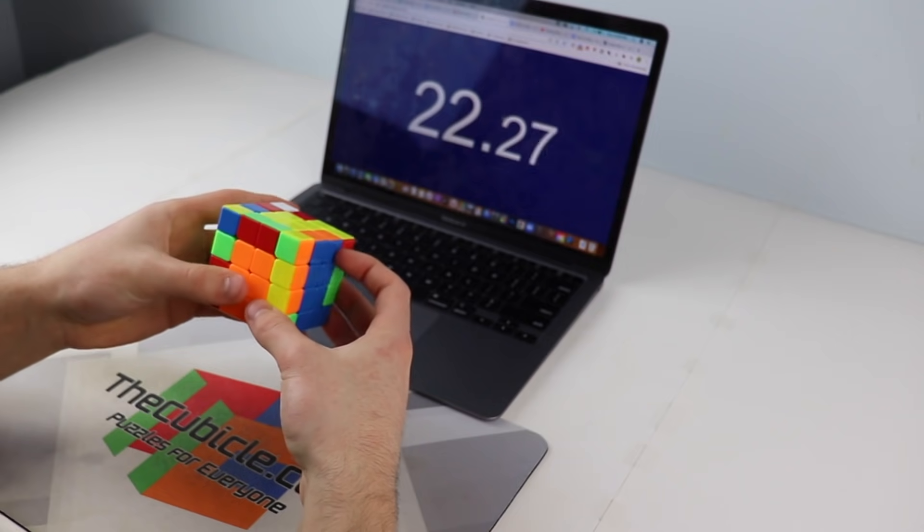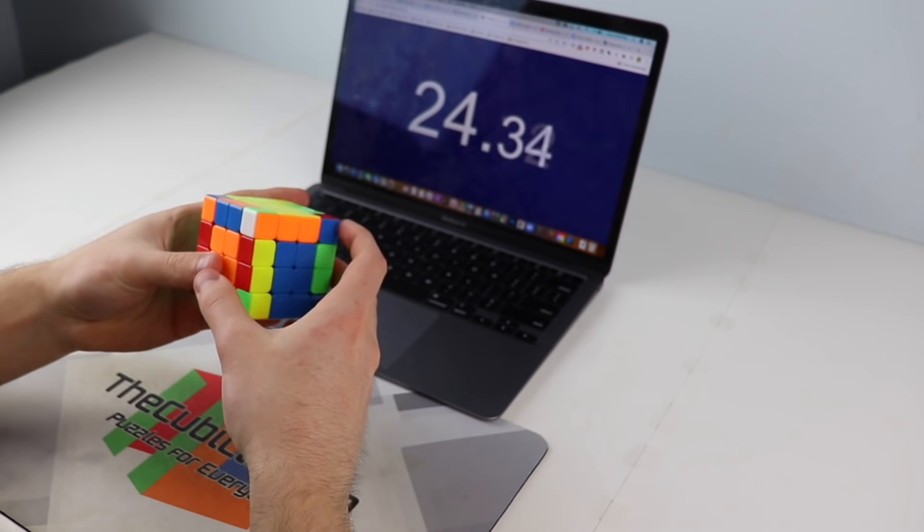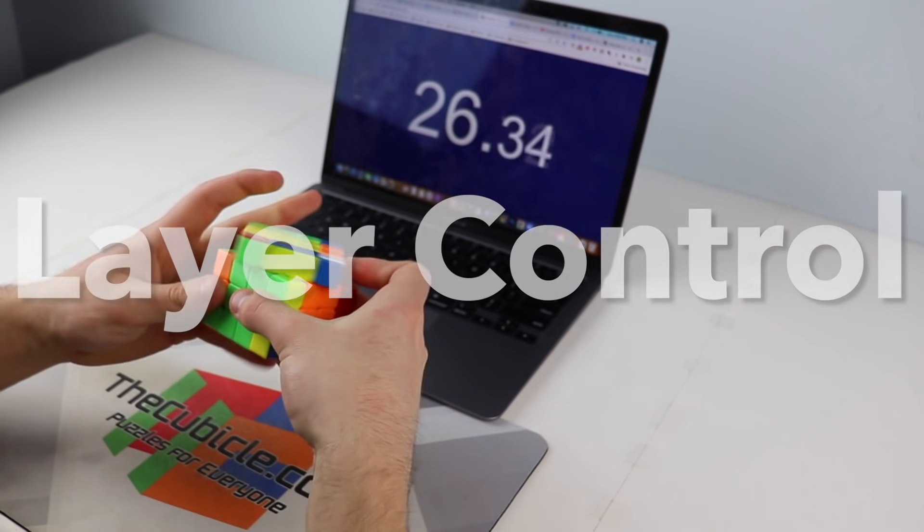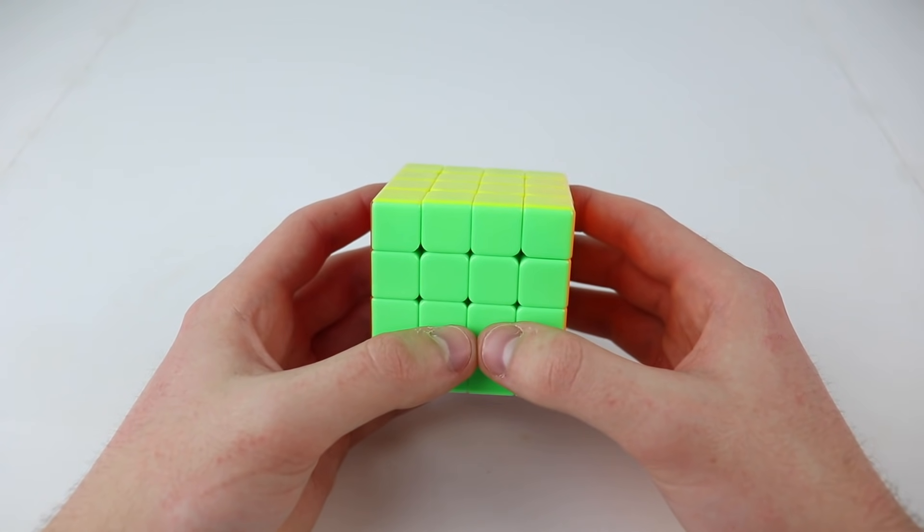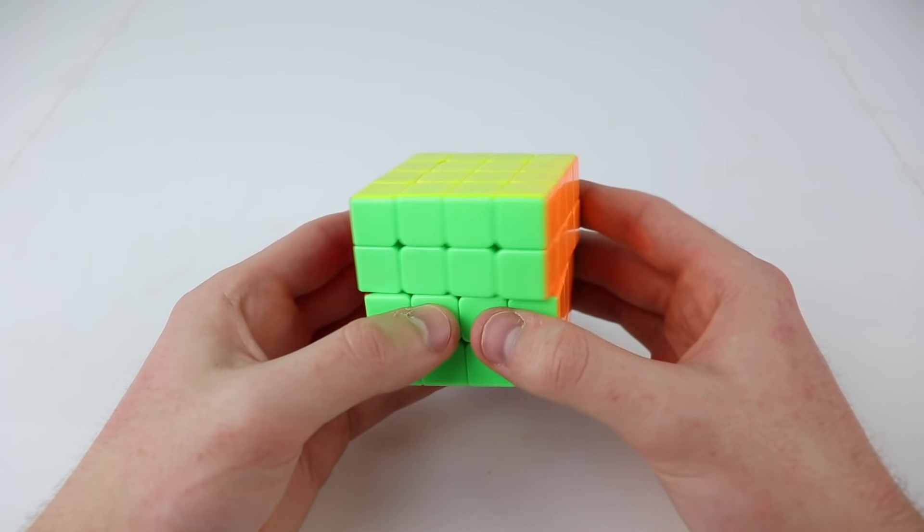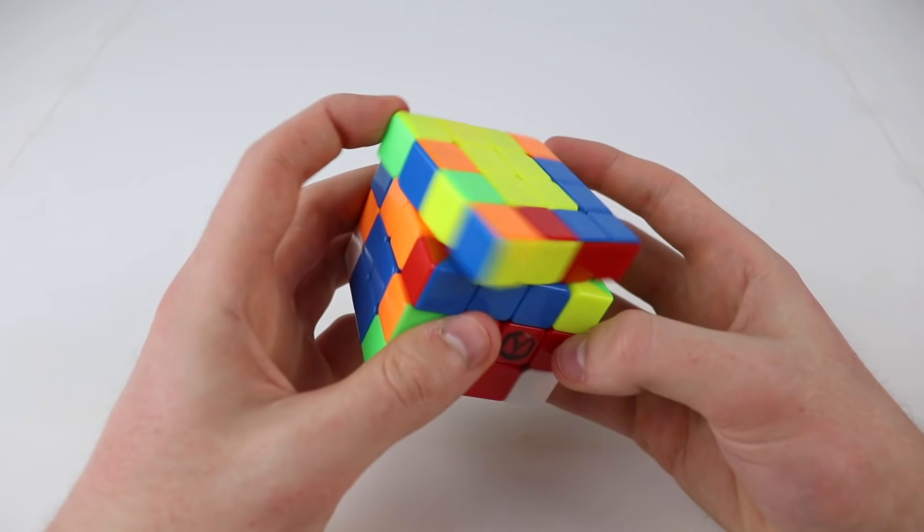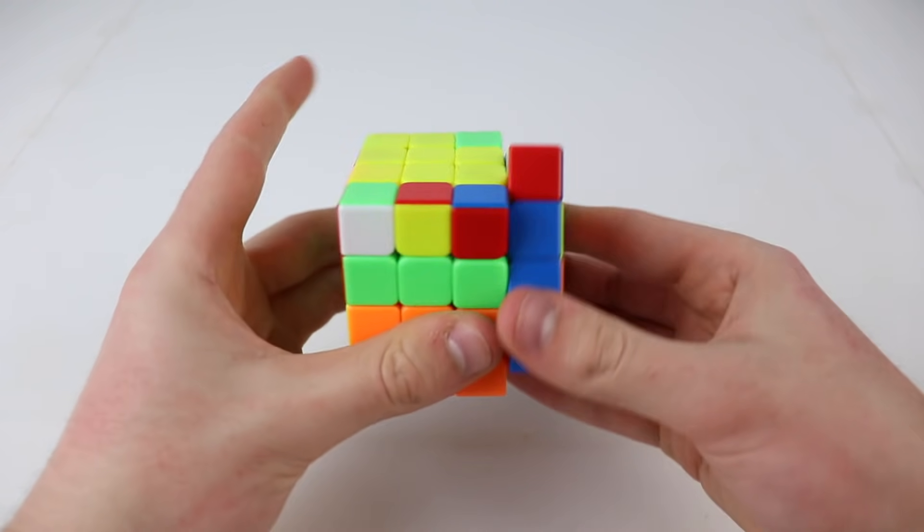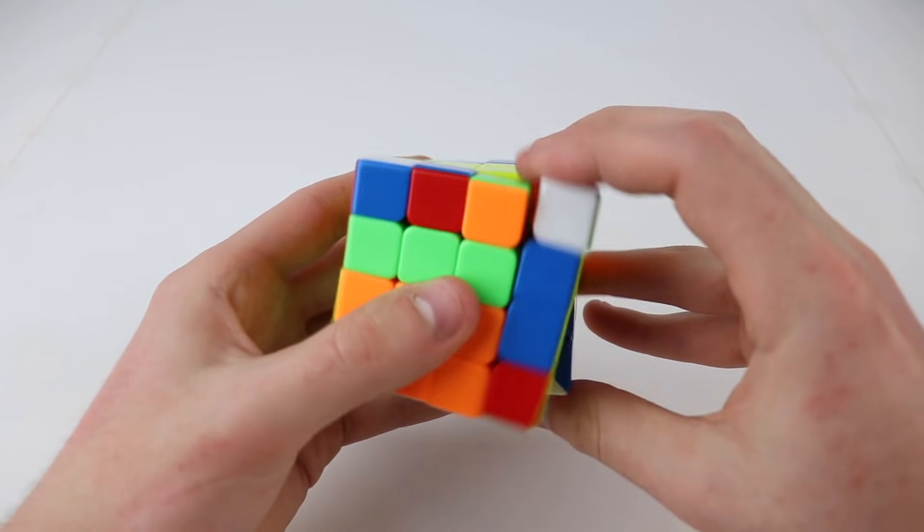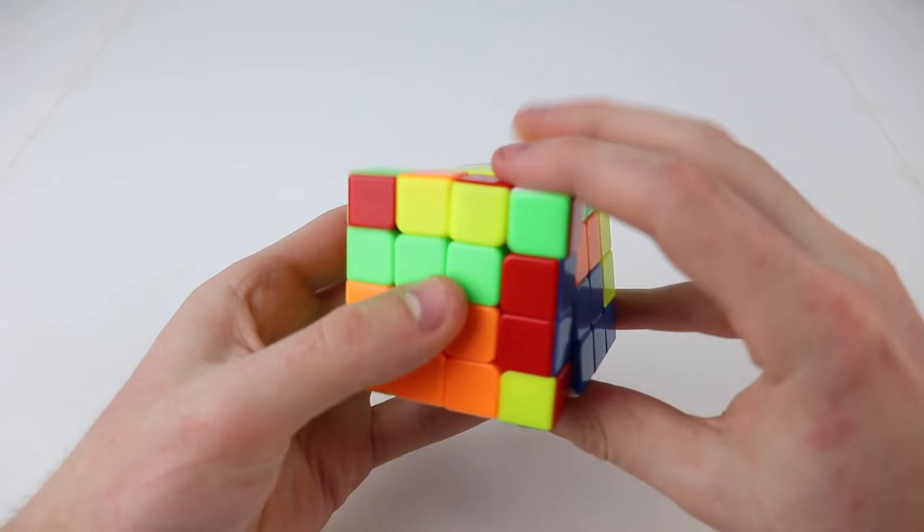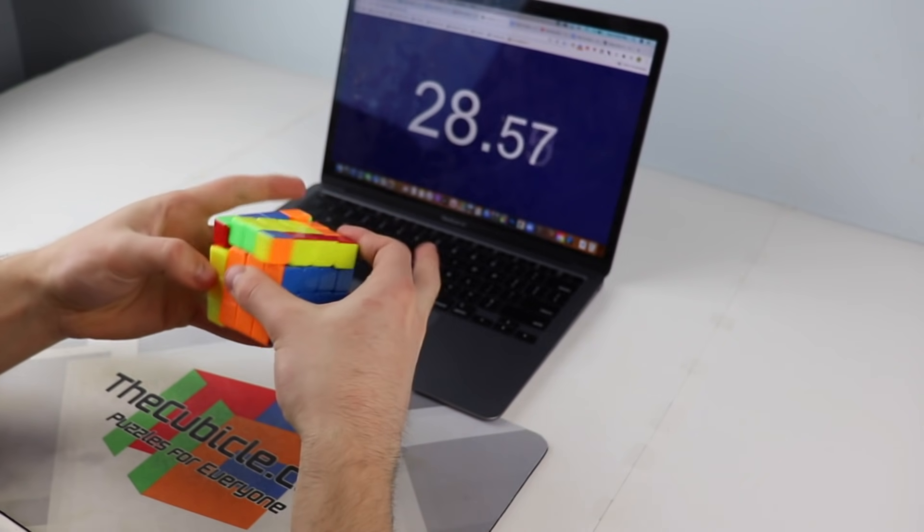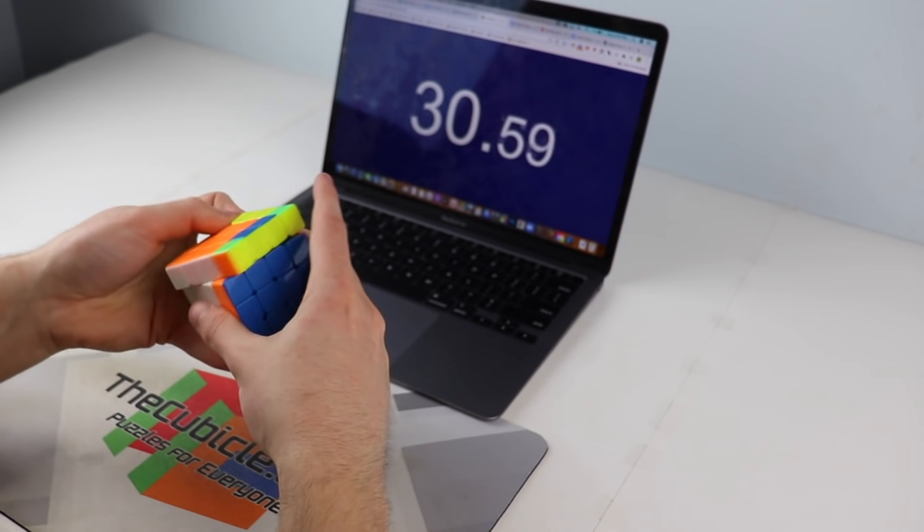The only area where 4x4 turning is more complex than for 3x3 is when it comes to layer control. Because of the extra layer on 4x4, you will very often have to turn two layers at the same time with your finger tricks, and sometimes you have to quickly switch between turning two layers of a side, and turning just one layer of that same side. This will take a lot of practice, but after all, if you aren't willing to practice, then cubing isn't the hobby for you.